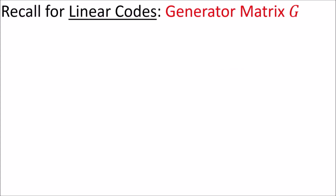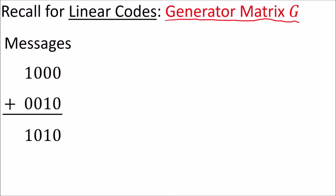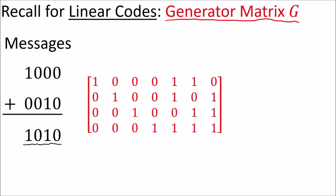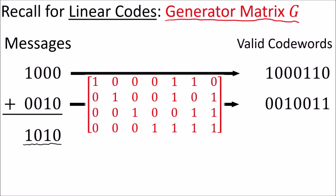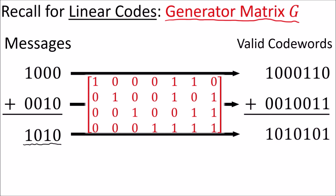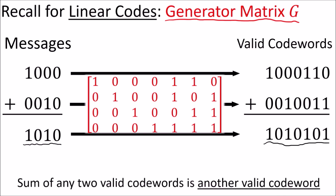Recall that for a linear code we have a generator matrix. When we deal with messages, notice that the sum of any two messages is another message. And if we put these messages through the generator matrix we'll get two valid code words, and we'll find that the sum of any two valid code words is another valid code word. So with linear codes, if we add any two valid code words together we're going to get another valid code word.